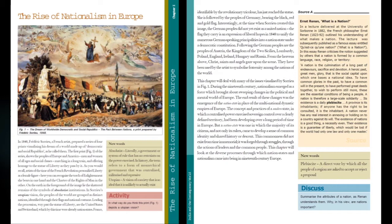Following the United States and Switzerland is France, identifiable by the revolutionary tricolor, which has just reached the statue, indicating France had only recently become a nation-state. The French were followed by the people of Germany bearing the black, red, and gold flags. Interestingly, at the time Soro created this image in 1848, Germany did not yet exist as a united nation — it was only a group of states about to unify, so Soro gave them a tricolor flag to represent them.